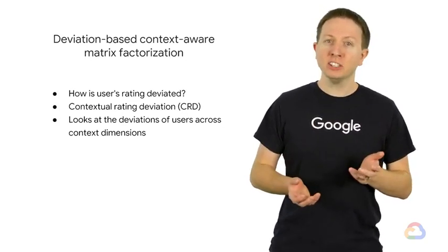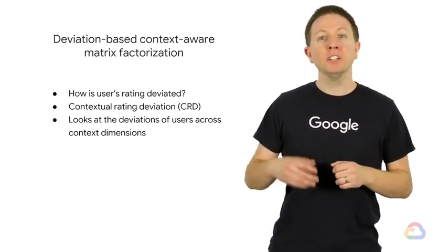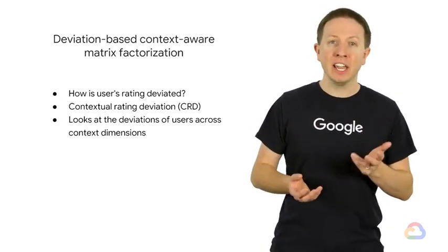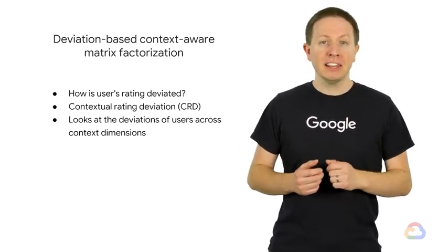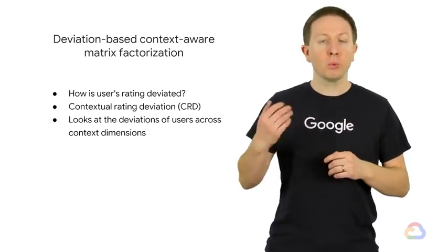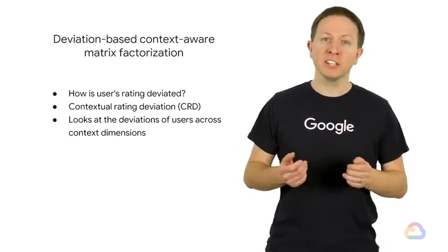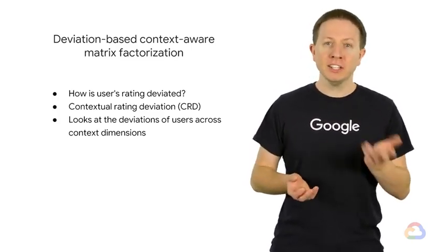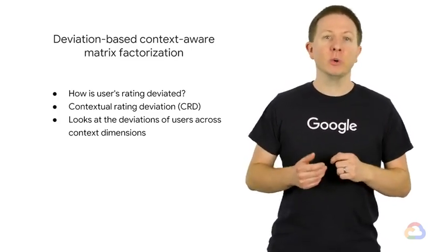In deviation-based context-aware matrix factorization, we want to know how a user's rating is deviated across context. This difference is called the contextual rating deviation, or CRD. It looks at the deviations of users across context dimensions. Let's look at a quick example.